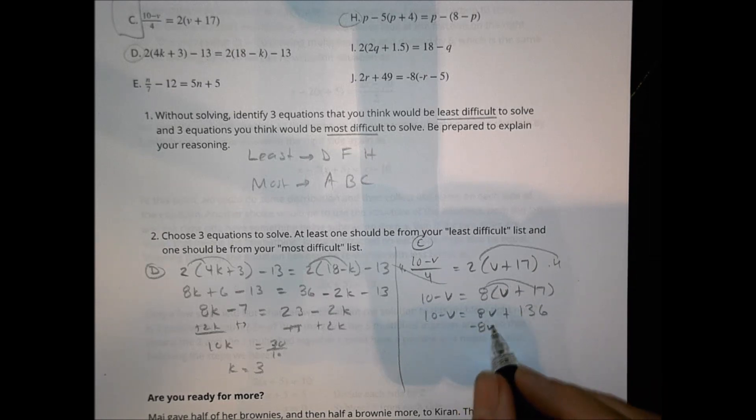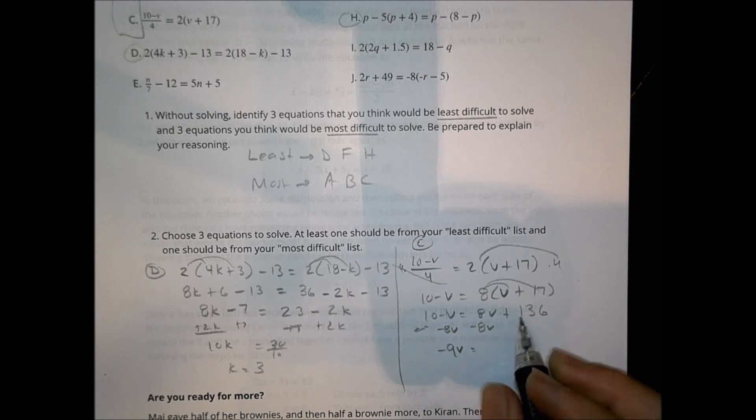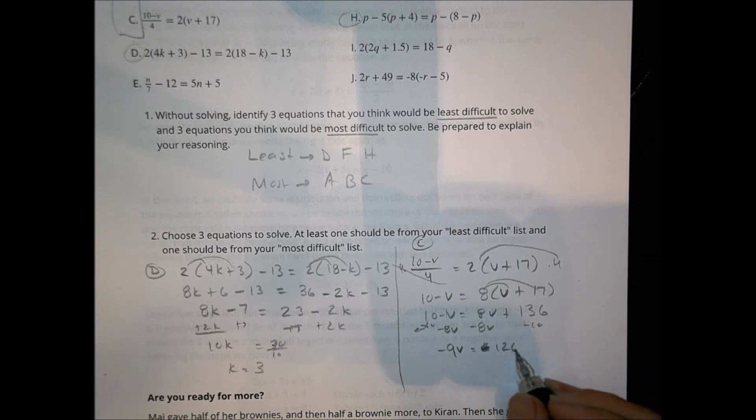Now we'll distribute the 8 out to 10V equals 8V plus 8 times 17 is a whole 136. Let's subtract 8V. So 1V minus 8V is negative 9V. And we're going to say that's equal to, subtracting 10, subtracting 10, 126. Divide both sides by negative 9 so that V equals negative 14. So it wasn't too bad after all. And it's done. Hopefully you picked some that you wanted to do.